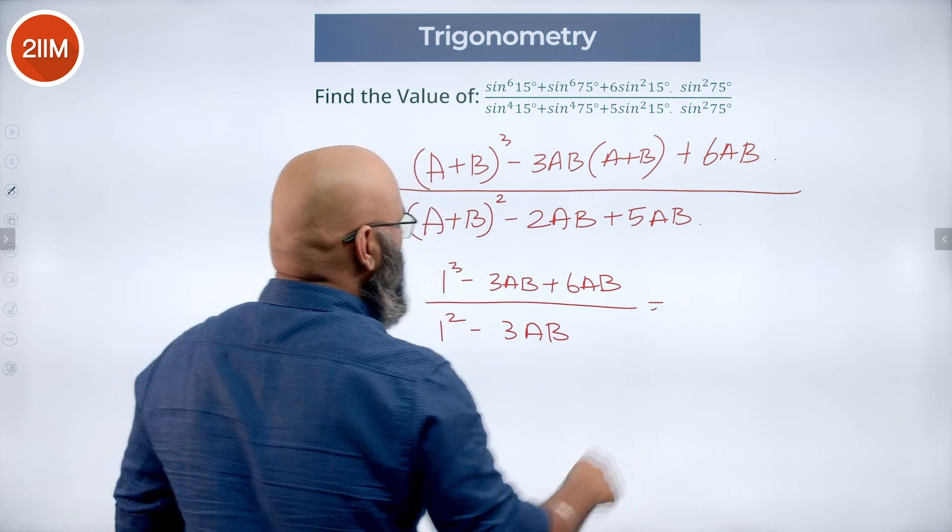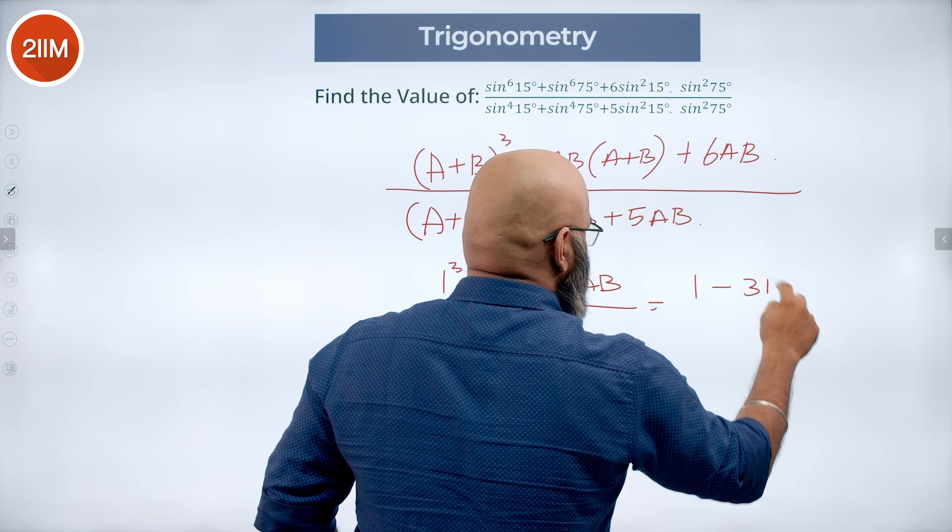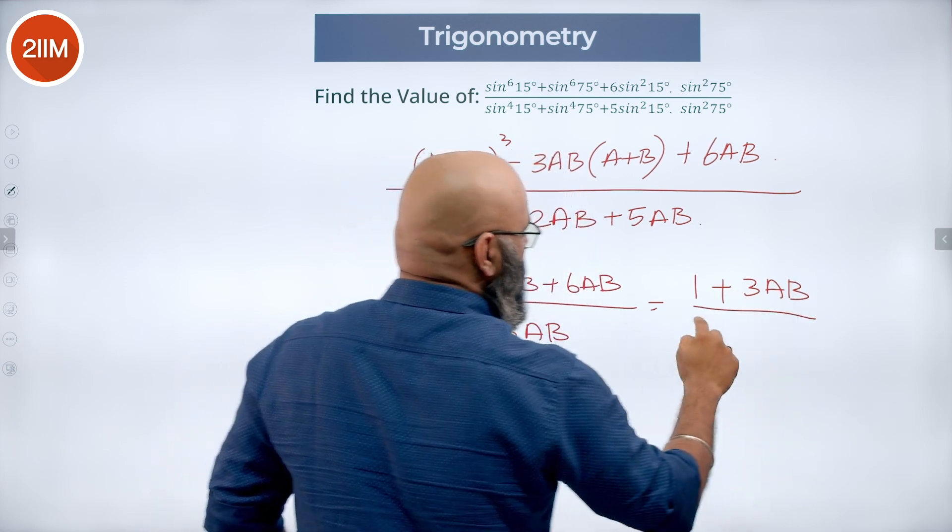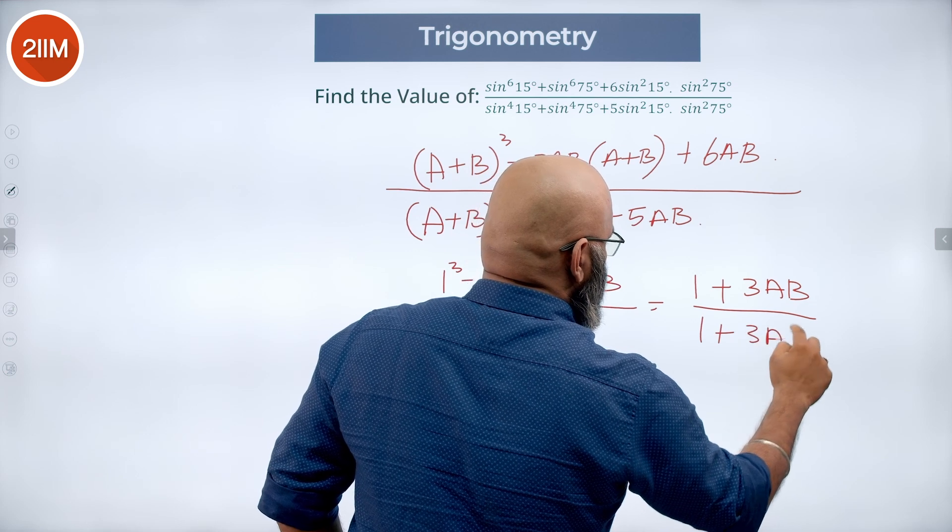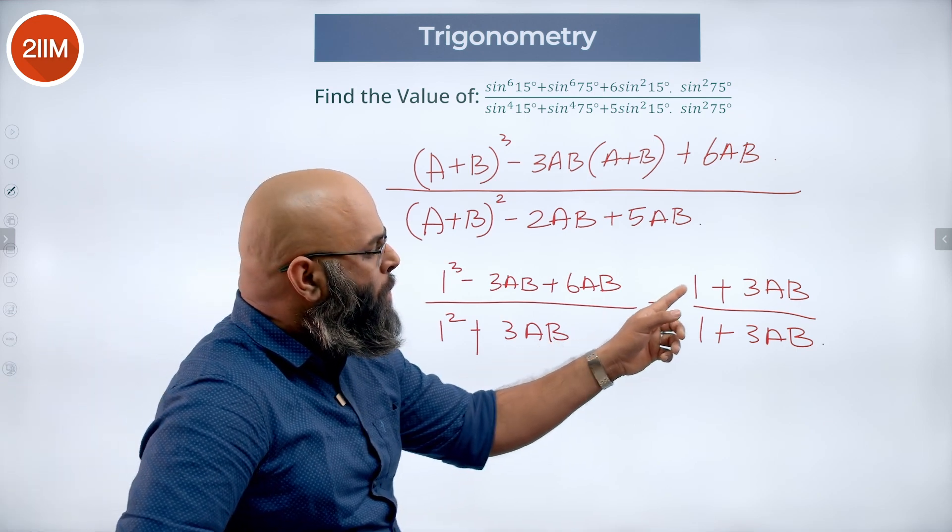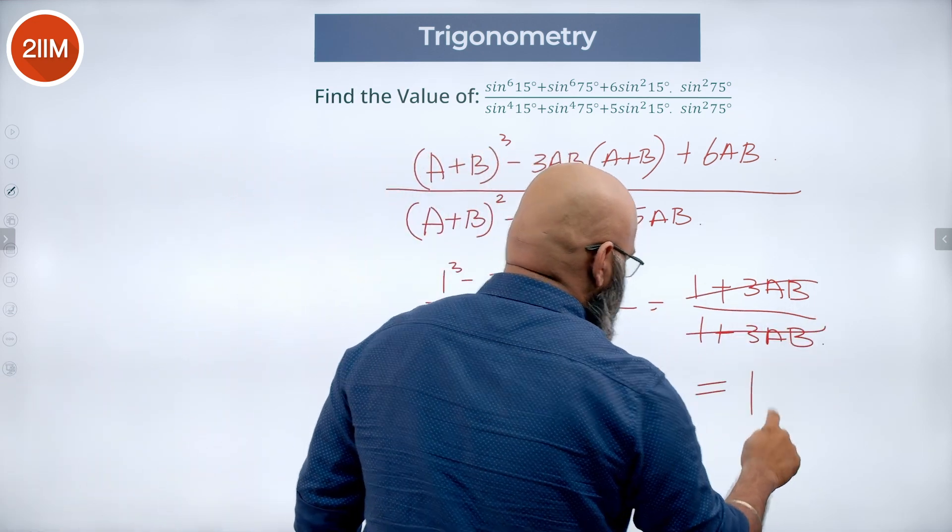So further simplifying we get 1 minus 6ab minus 3ab is minus 3ab plus 3ab divided by 1 plus 3ab. So 5ab minus 2ab is 3ab. So 1 plus 3ab by 1 plus 3ab we get the answer as 1.